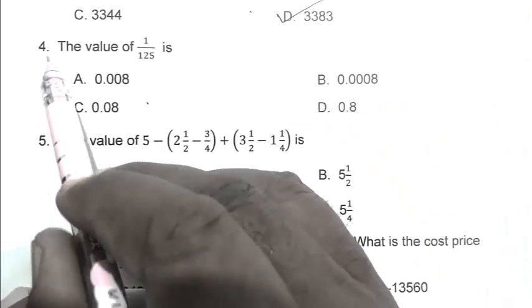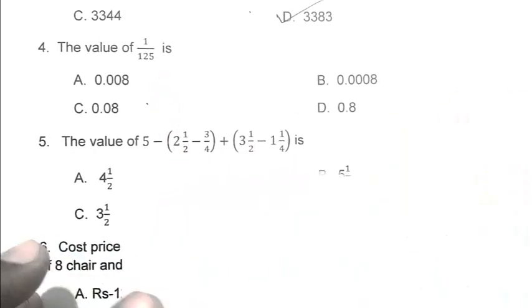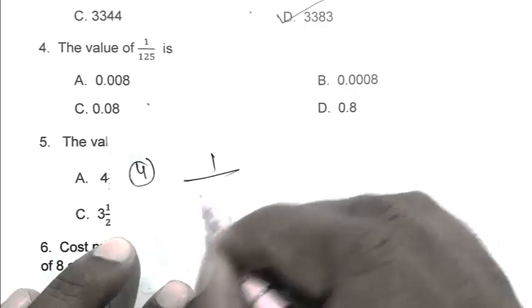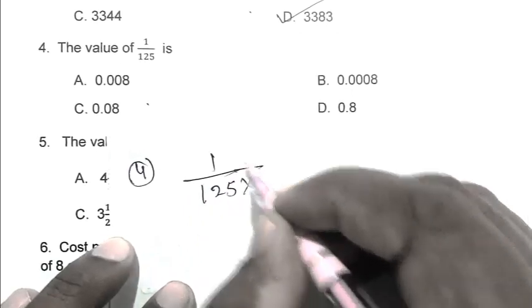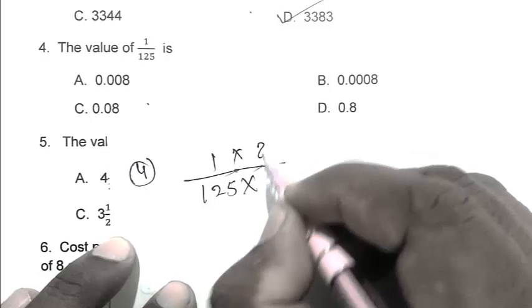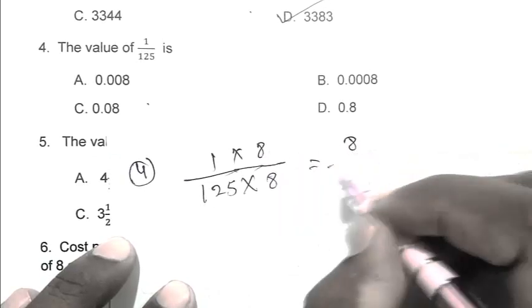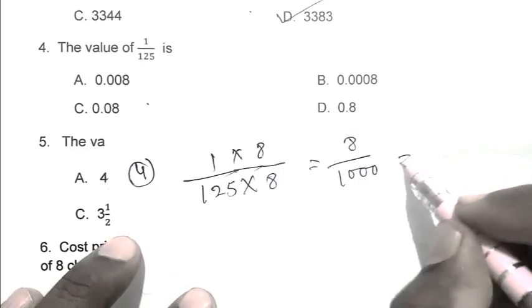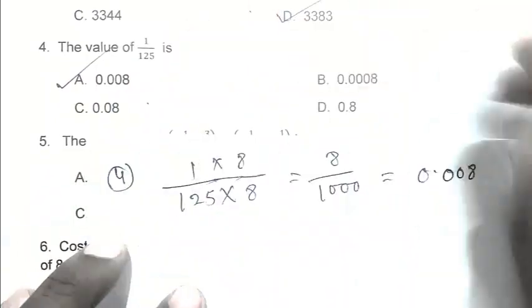Question number 4. The value of 1 upon 125 is? So friend, 1 upon 125 — we multiply both sides by 8, it becomes 8 upon 1000, which equals 0.008. So friend, A is the right answer.